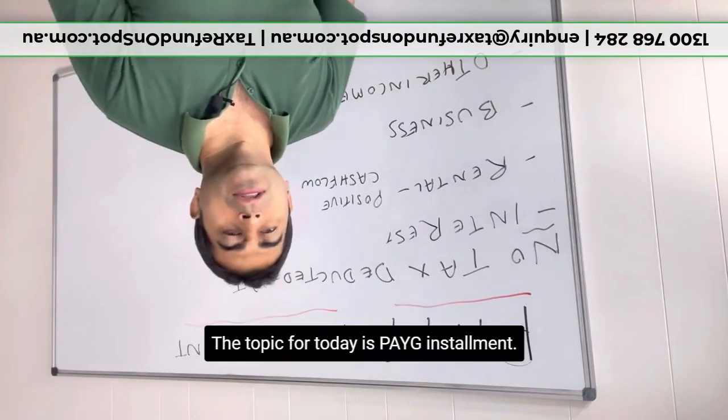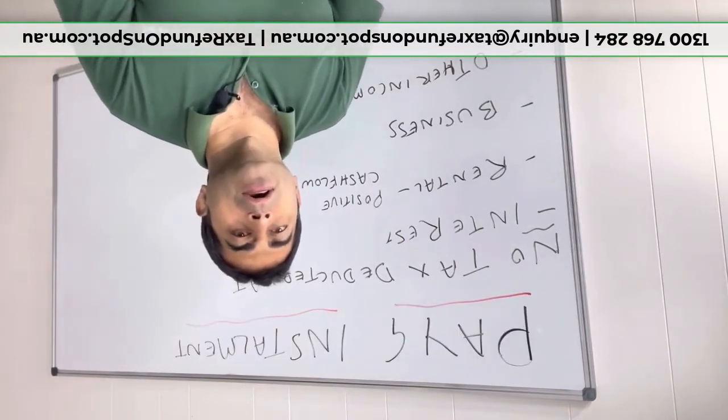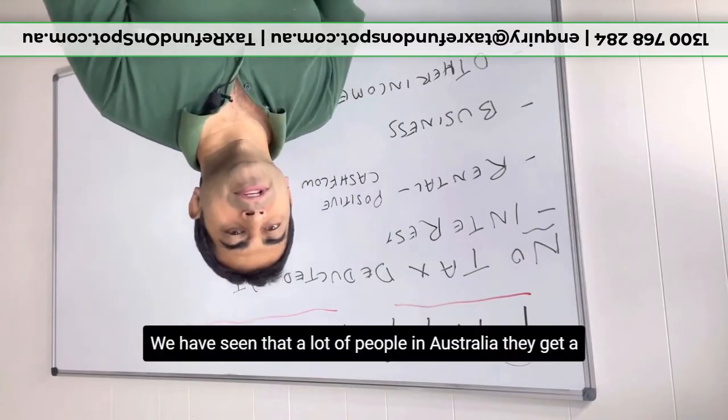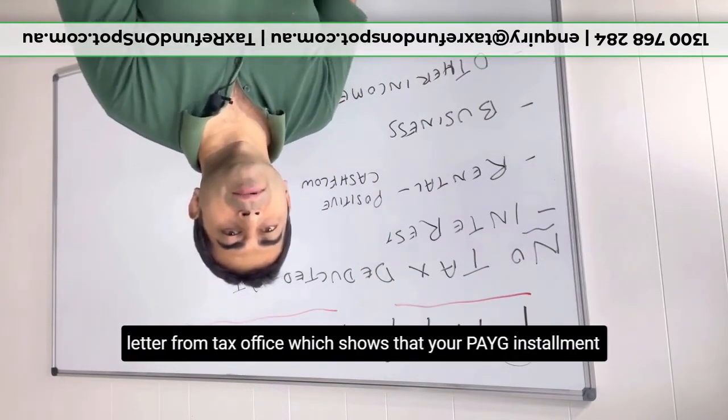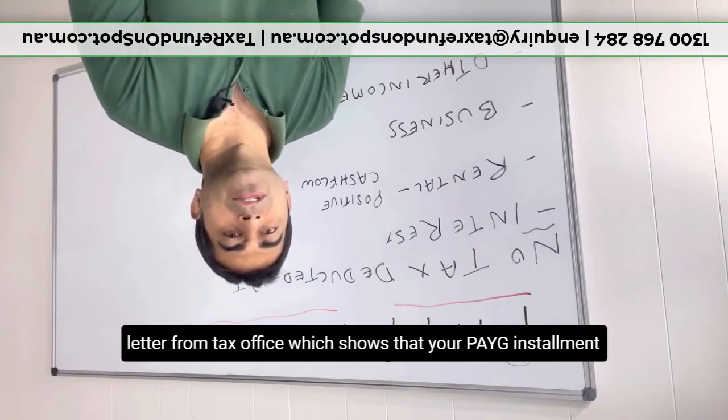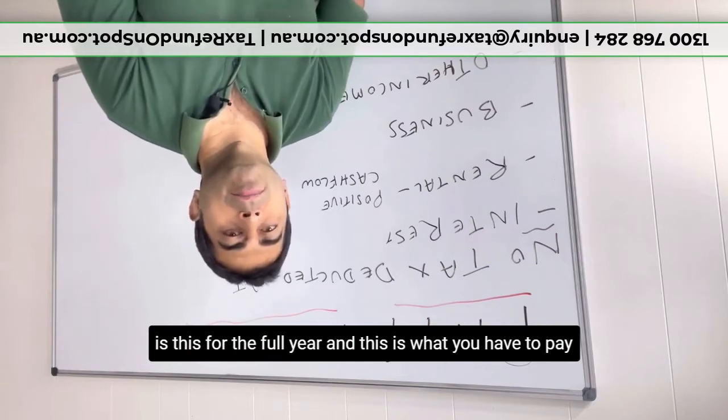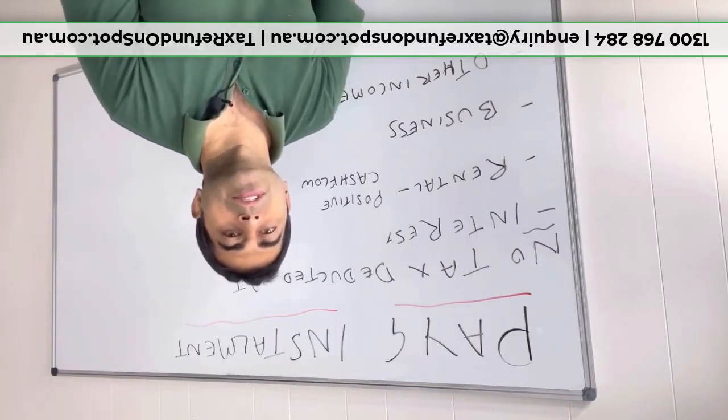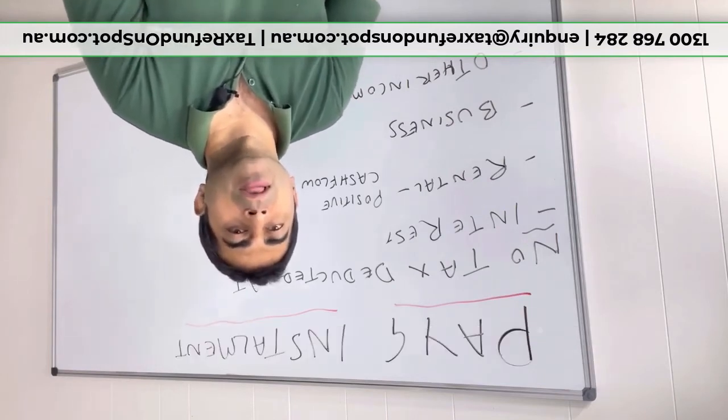Hello everyone, the topic for today's video is PAYG installment. We have seen that a lot of people in Australia get a letter from the tax office which shows that your PAYG installment is this for the full year, and this is what you have to pay every quarter. Sometimes they write an amount, sometimes they write some percentage.